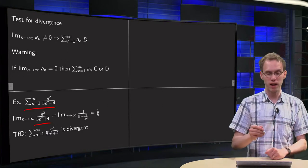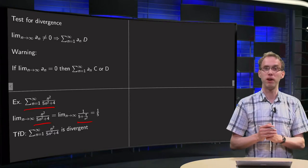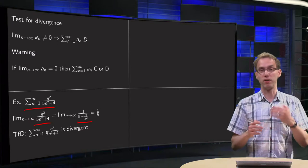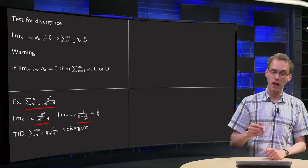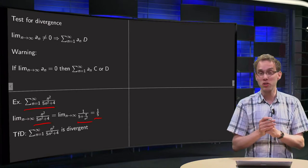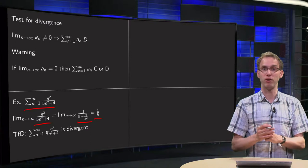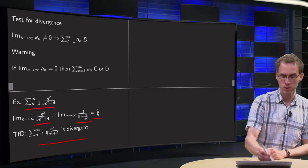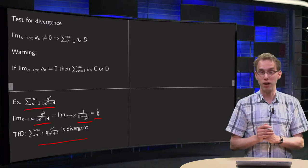We can divide by the highest power, then we get 1 divided by 5 plus 4/n squared, and then we can use the limit of the sum rule and we get 1 over 5. So we see that the terms do not tend to zero, and we can use the test for divergence to conclude that our series is divergent.